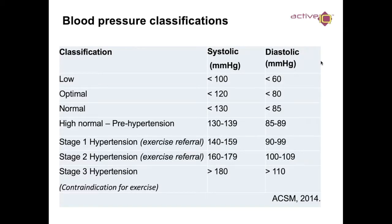Low blood pressure would be a systolic reading under 100 over 60. On a blood pressure machine, the top reading is systolic and the bottom reading is diastolic. Optimal blood pressure is 120 over 80. Anything above that is high blood pressure. Anything higher than 140 over 90 is stage 1 hypertension, going all the way up to hypertension stage 3.